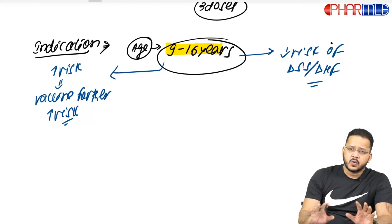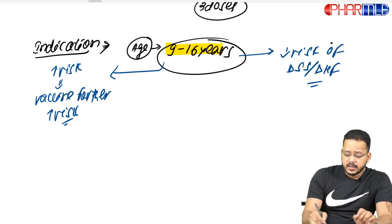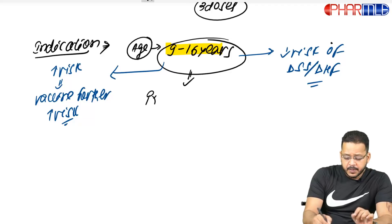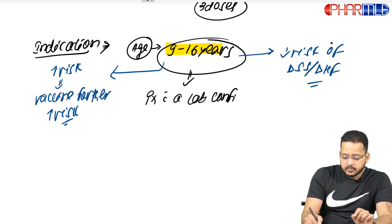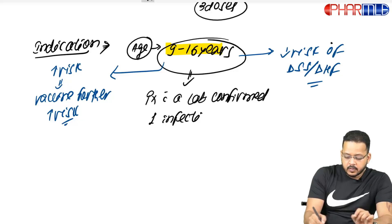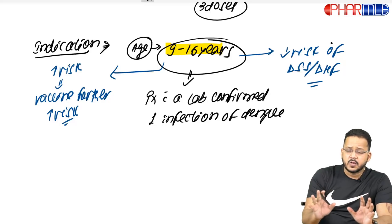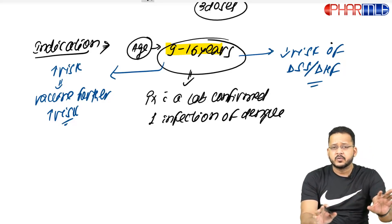We do not give this vaccine to all people around the world. We give it only to those patients with a lab-confirmed prior infection of dengue — meaning only a patient who has already been infected with dengue once.